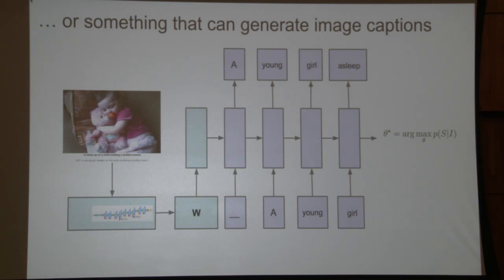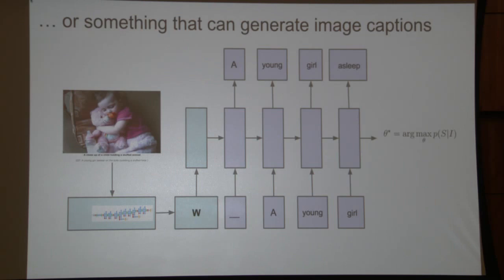You can connect together convolutional image models: instead of initializing with an English sentence, you initialize with the high-level features from an image model, map those into a fixed-dimensional vector, and use that as the encoder initialization. If you have training data of image plus human-written caption, and you train the model repeatedly on that training set, you can train a model to produce very good-looking captions. For a test image of a young girl asleep on a sofa cuddling a stuffed bear, the model generated: 'a close-up of a child holding a stuffed animal' and 'a baby is asleep next to a teddy bear.' If you'd asked me five years ago if computers could do that, I would have said no.